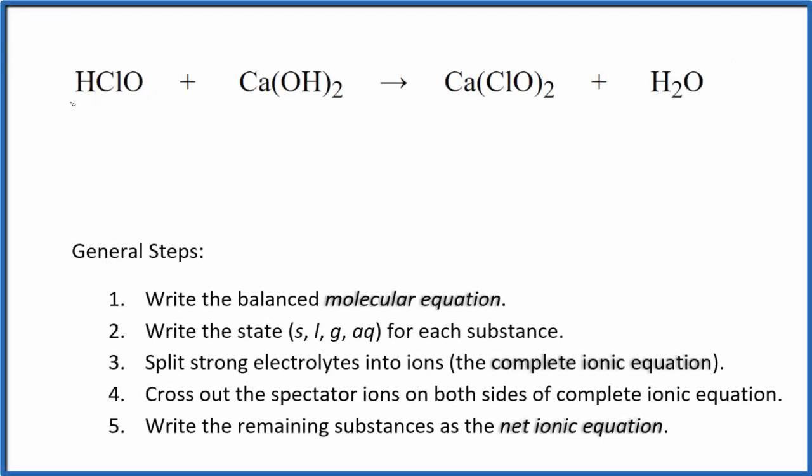To balance the net ionic equation for HClO plus Ca(OH)₂, this is hypochlorous acid and calcium hydroxide, let's first balance the molecular equation. This is the molecular equation.